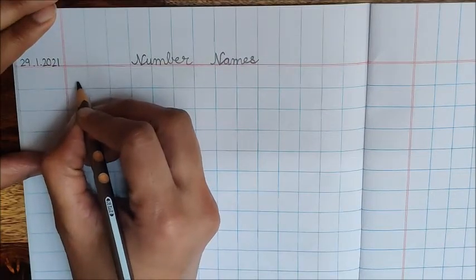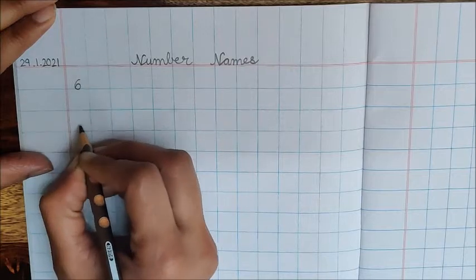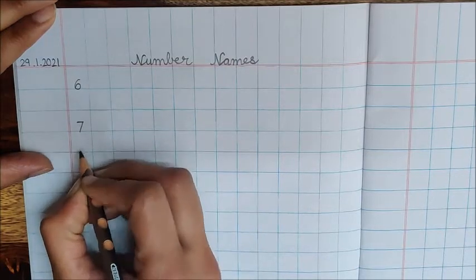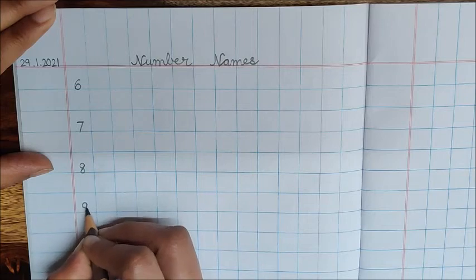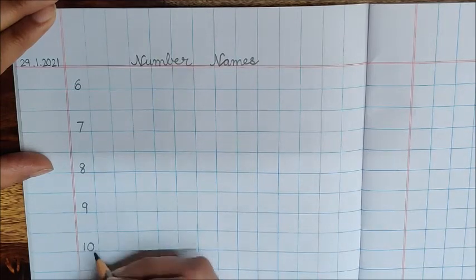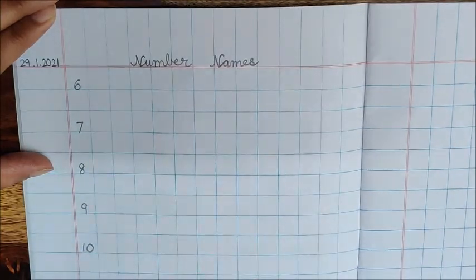Now in the first box, write down 6. Leave one box, then write down 7. Leave one box, 8, 9, 10. See, I have left one box in between these numbers.